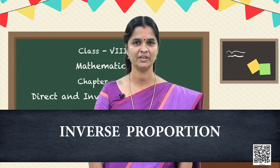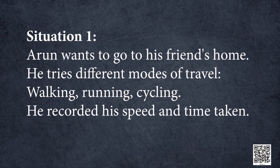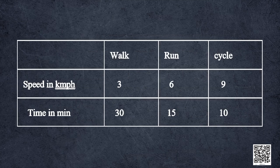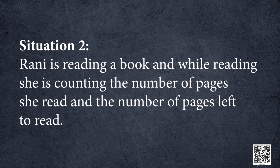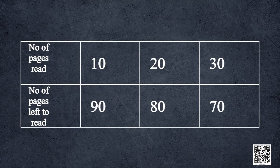Look at this situation. Here, Iddo wants to go to his friend's home. He tries different modes of travel — walking, running, cycling — and records his speed and the time taken. The observations are given in the tabular column. Situation 2: Rani is reading a book, and while reading, she is counting the number of pages she read and the number of pages left to read. Her observations are as follows.